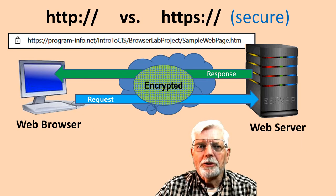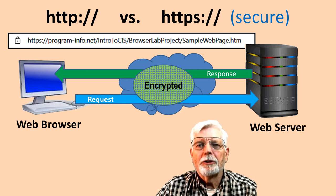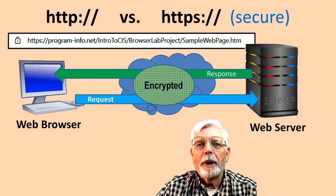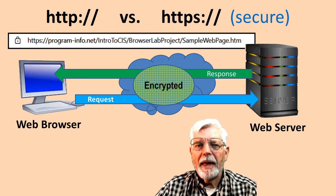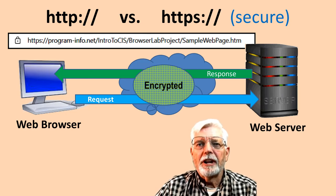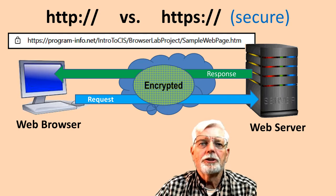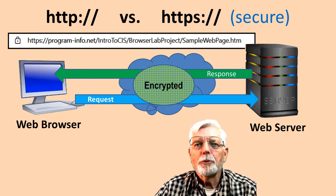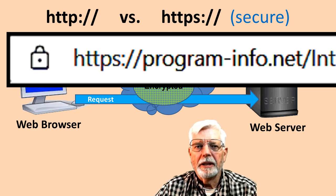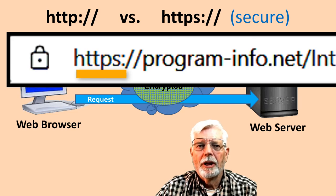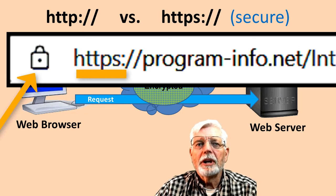Typically, data is routed through six to eight different computers as it passes between the browser and the server. This has provided hackers the opportunity to capture and save sensitive data such as bank or payment information — sometimes referred to as the man-in-the-middle attack. Most web traffic now uses the HTTPS protocol, where the S stands for secure. Communications are encrypted using Transport Layer Security, or TLS. The protocol is referred to as HTTP over TLS, or just HTTPS. The symbol of a closed lock is also used to indicate that the web communication is encrypted.